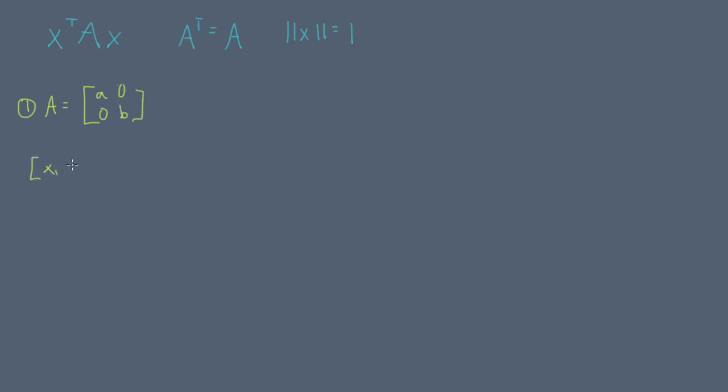So if we write the quadratic form in vector notation in two dimensions, we get the following form and we can further reduce this down to an expression with no vectors and no matrices.